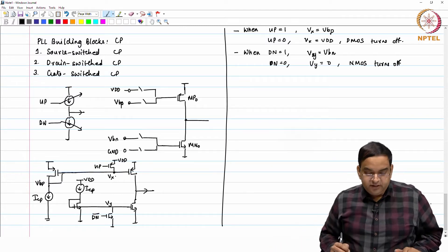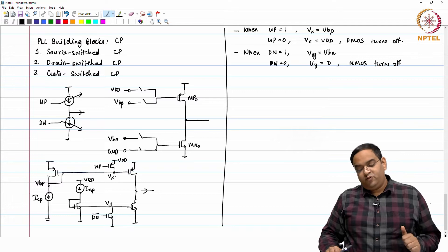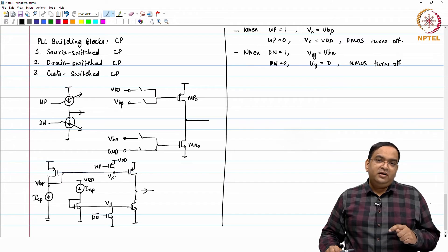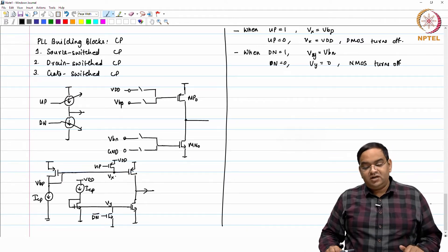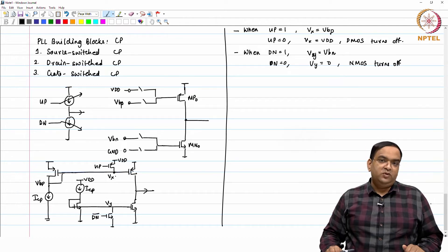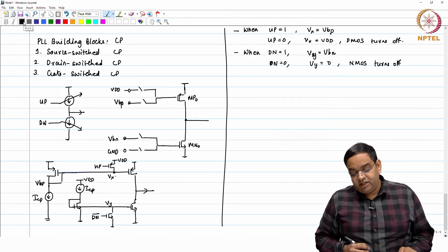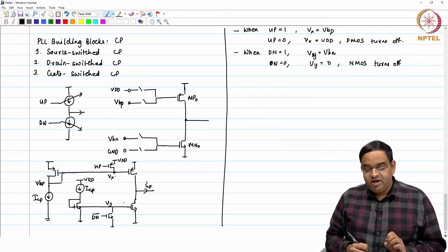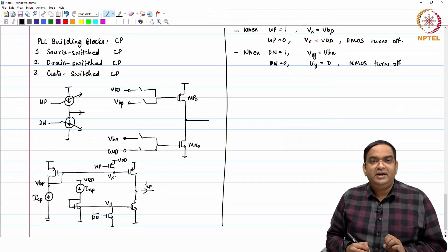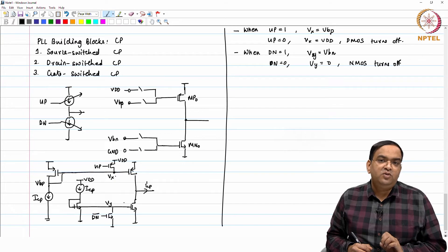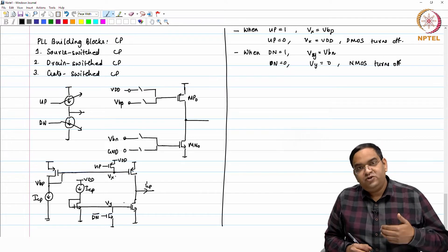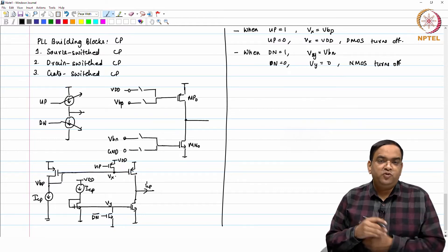What you see here is that the gate voltage of the PMOS current source and the NMOS current source, these gate voltages are turned off by the switches which are controlled by PFD outputs up and down. This is the way you can turn on and off the current source. When these 2 transistors are turned off at that time Vgs minus Vt is equal to 0 or actually less than 0.